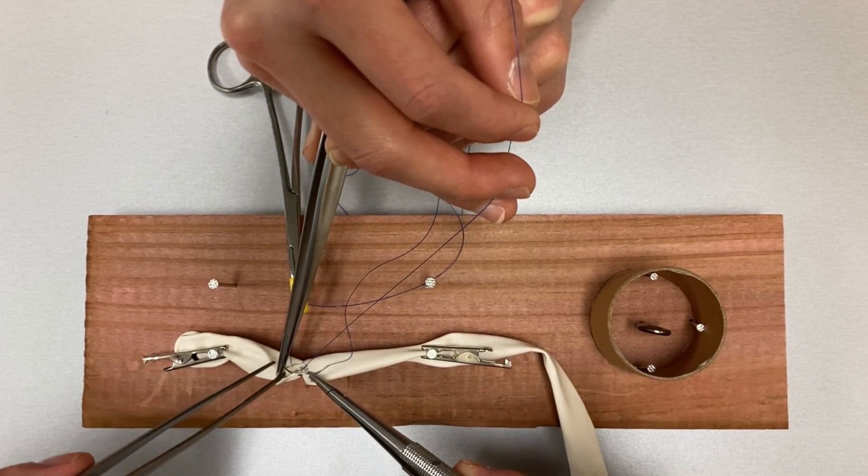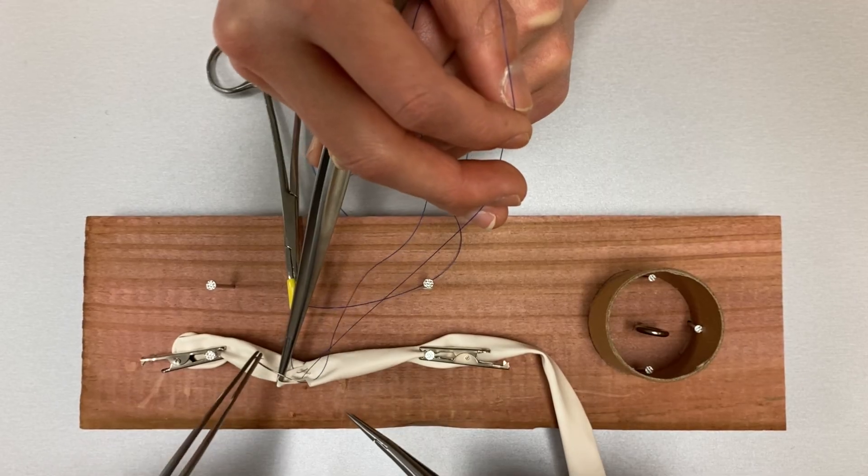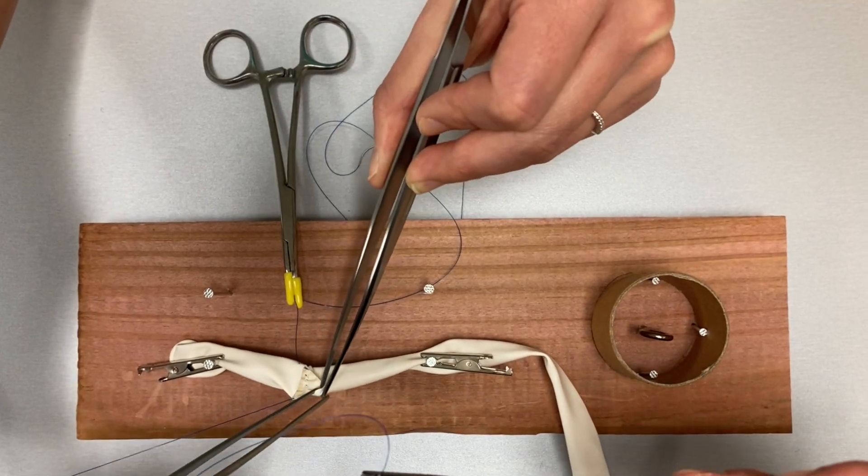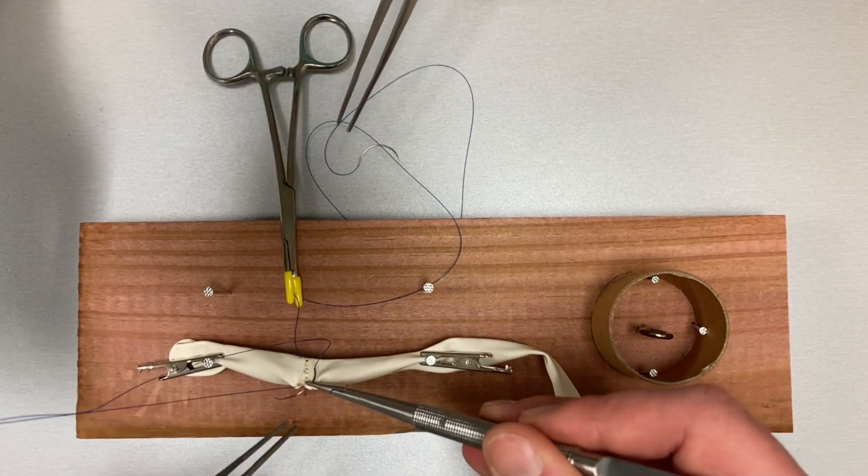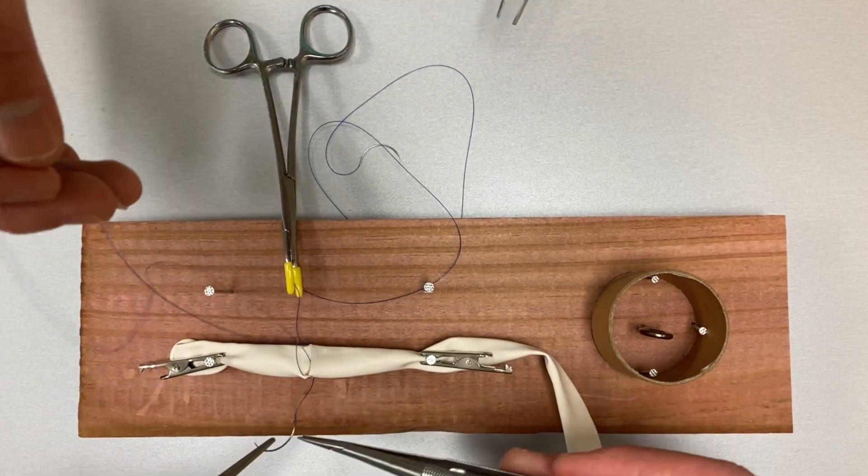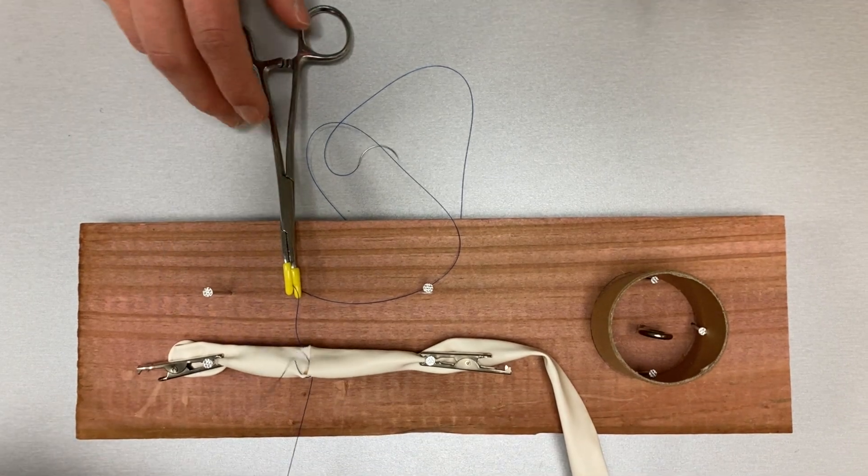As you approach the 9 o'clock position of the left vessel, sewing towards yourself will become difficult. When this occurs, take a final bite from inside to outside and shod the working end of the suture.